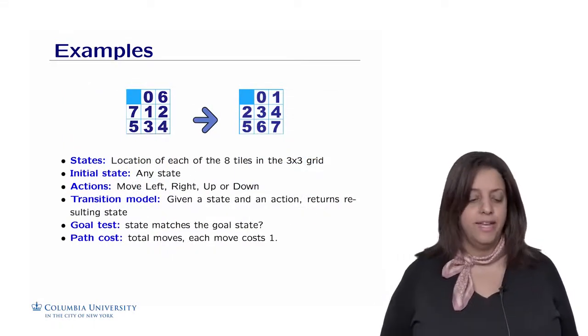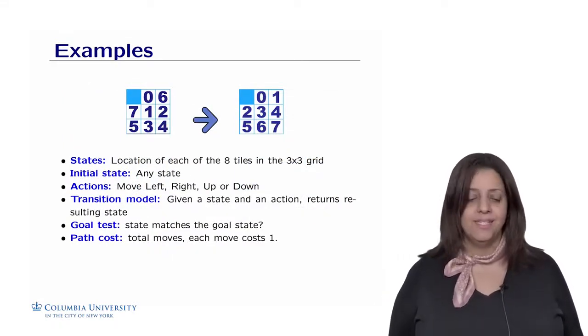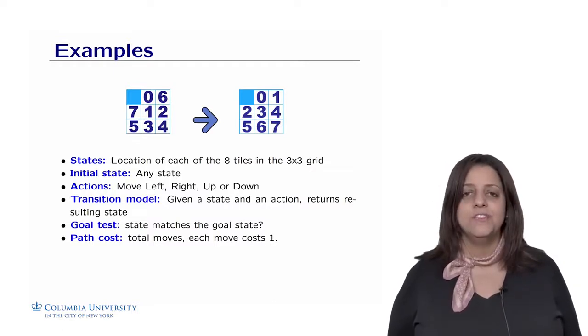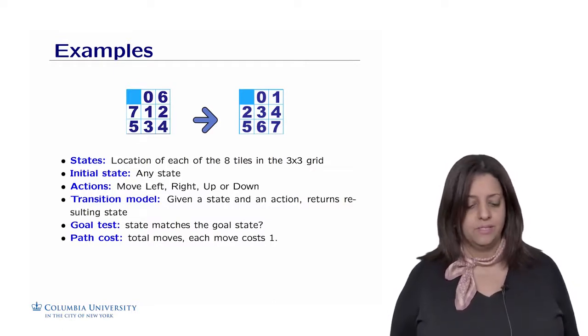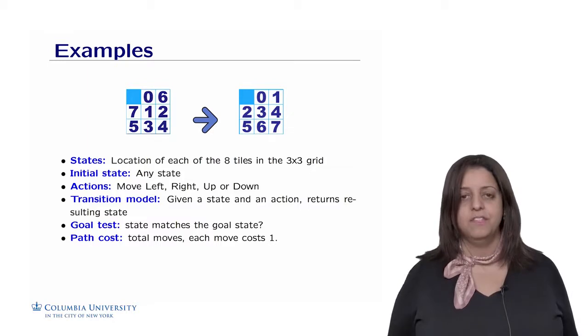Let's now formulate the problem of the 8 puzzle. So first of all, what are the states? The state is any configurations of the 8 tiles on the 3 by 3 grid. So the location of each of the tiles in the 3 by 3 grids represent the possible states.